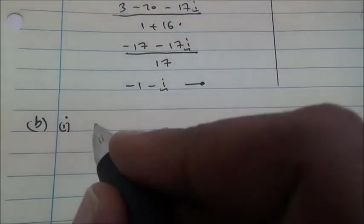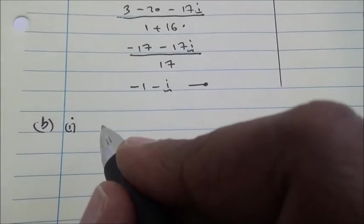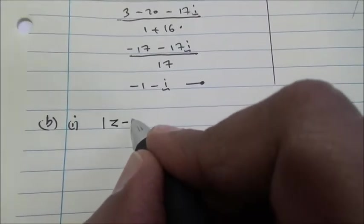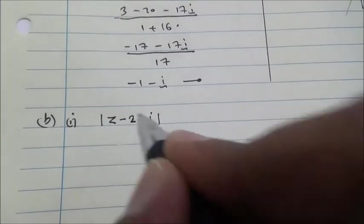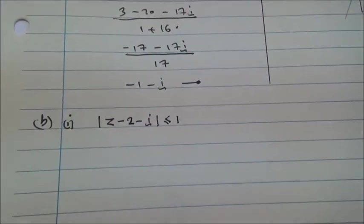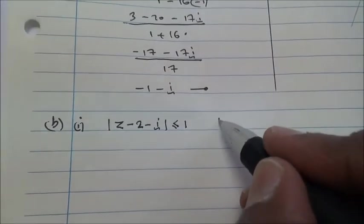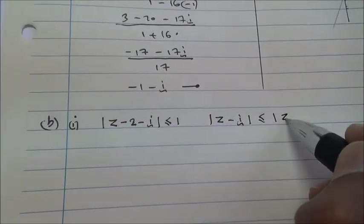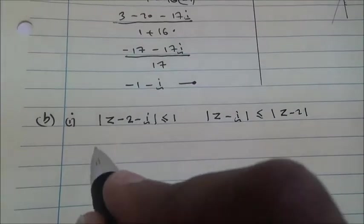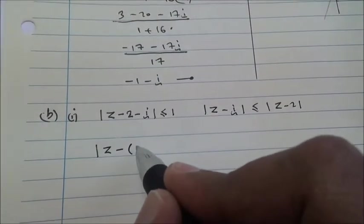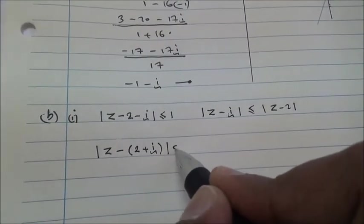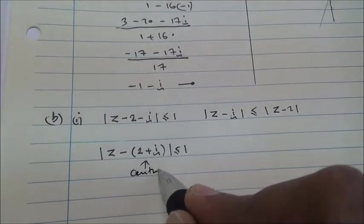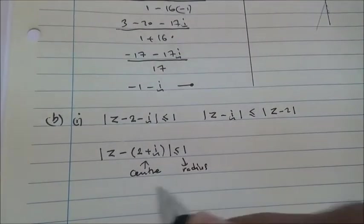Now for the second part, we need to sketch on an Argand diagram and shade the region whose points represent complex numbers satisfying mod of z minus 2 minus i. We can write mod of z minus 2 plus i less or equal to 1. Now, this looks like a circle. This is the center and this is the radius of a circle.